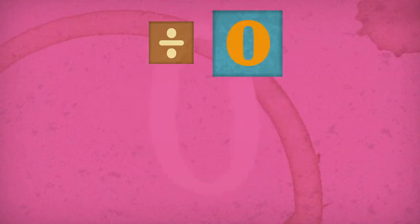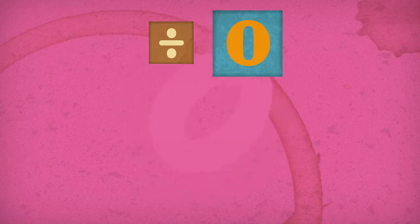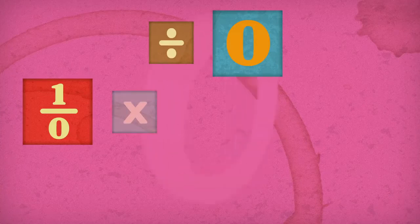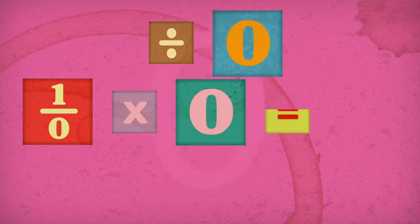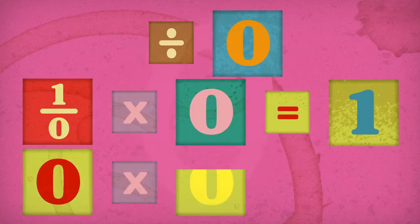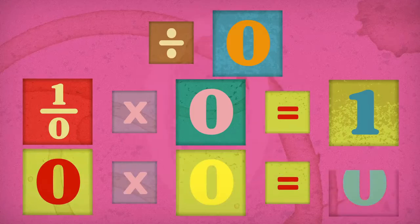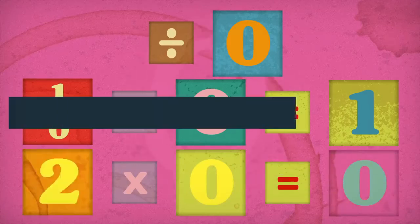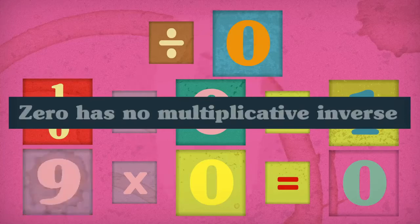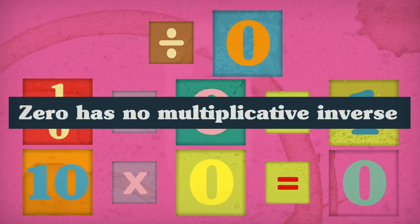If we want to divide by zero, we need to find its multiplicative inverse, which should be 1 over 0. This would have to be such a number that multiplying it by 0 would give 1. But because anything multiplied by 0 is still 0, such a number is impossible. So 0 has no multiplicative inverse.